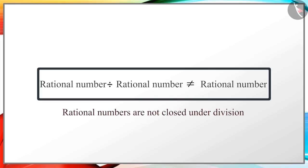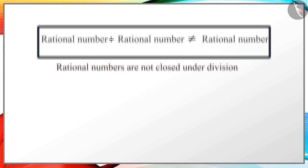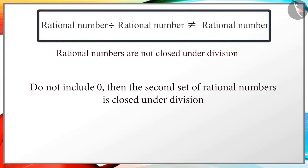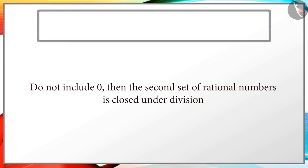Yes, children, rational numbers are not closed under division. But if we do not include 0, then all other rational numbers can be considered to be closed under division. Children, till now we have understood the closure properties of rational numbers for all operations.